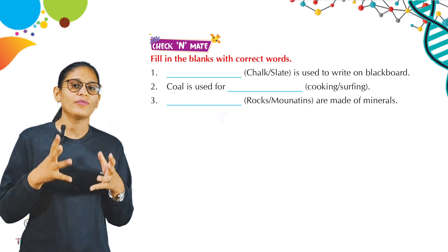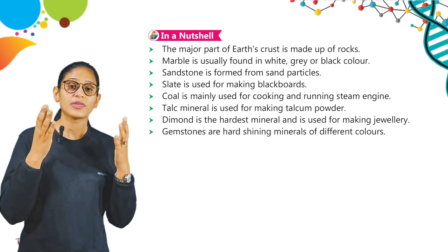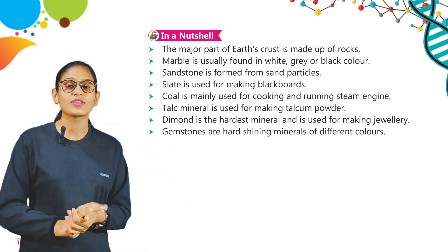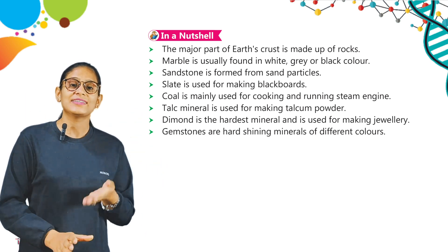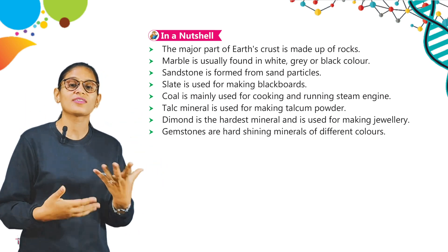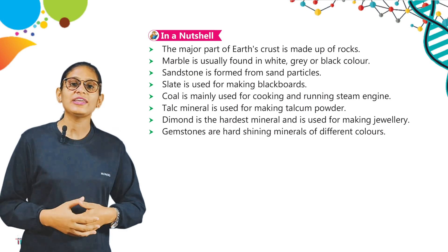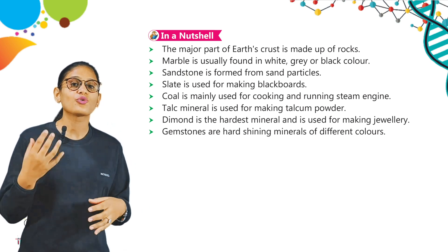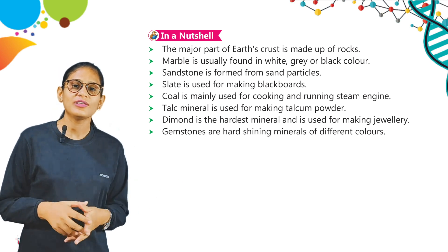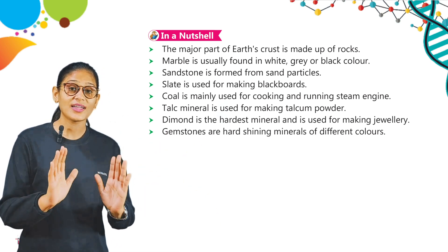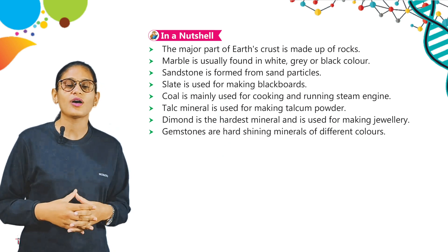Now let's discuss what we learned in this chapter in a nutshell. The major part of the earth's crust is made up of rocks. Marble is usually found in white, gray and black color. Sandstone is formed from sand particles. Slate is used for making blackboards. Coal is mainly used for cooking and running steam engines. Talc is a mineral used for making talcum powder. Diamond is the hardest mineral and used for making beautiful jewelry. Gemstones are hard shining minerals of different colors.